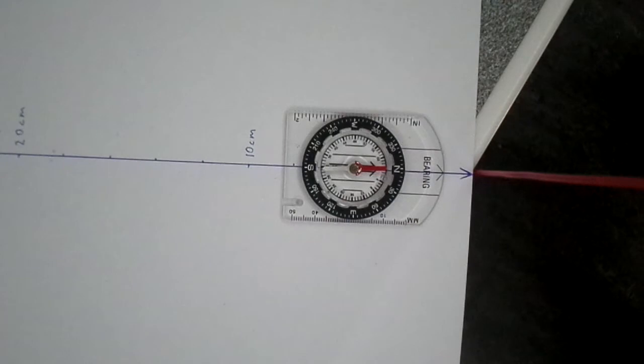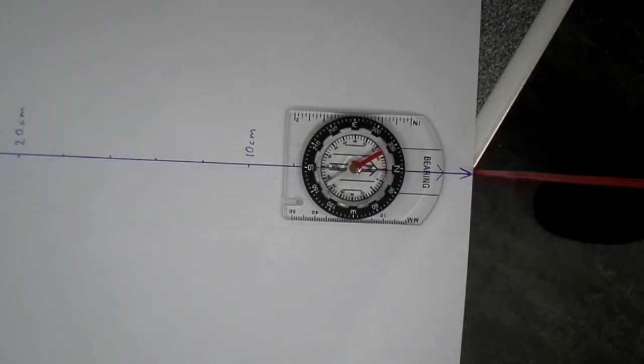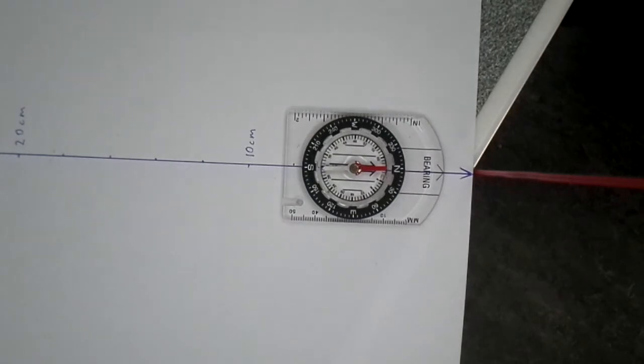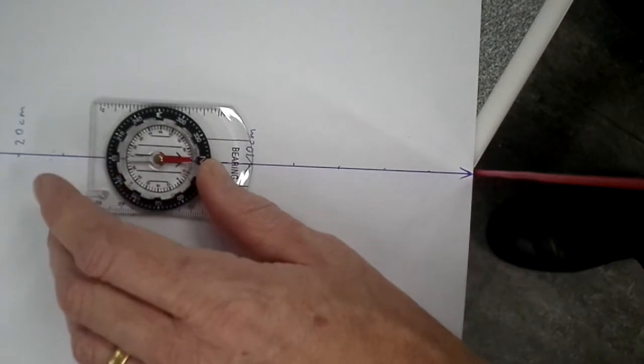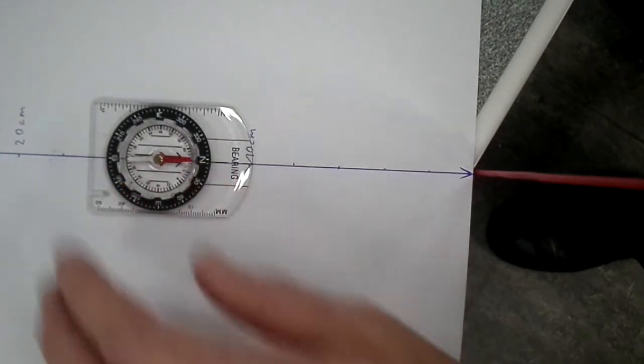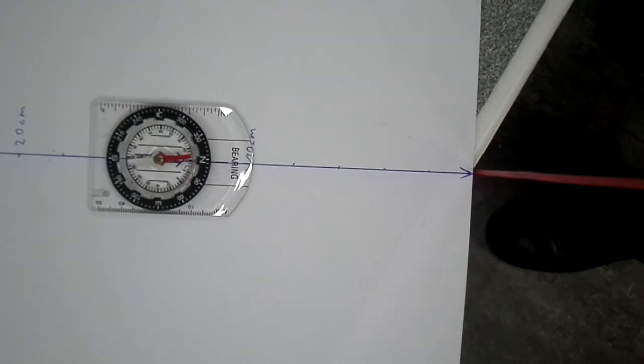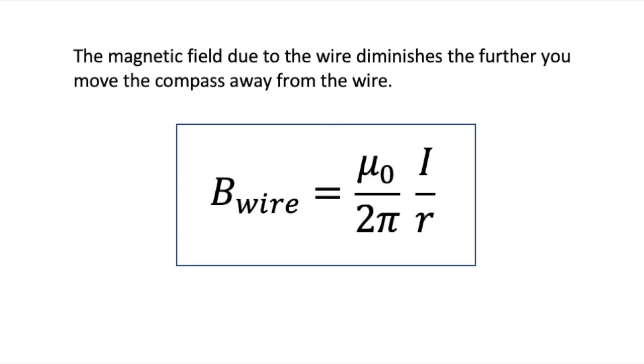So now we're ready to take some readings. But before we do, let's quickly look at how the compass behaves when we turn the current in the wire on and off using the switch. Here we can see the compass being deflected in an anti-clockwise direction. Using our right-hand curl rule, this confirms that the current is passing down the wire. If we look at the behaviour of the compass further away from the wire, we see the deflection is reduced. This matches the expectation we have from the magnetic field strength equation, which tells us that the strength of the magnetic field is inversely proportional to the distance from the wire.